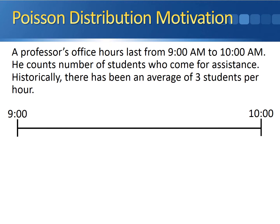Let me give you a motivational example for the Poisson distribution. A professor's office hours last from 9 a.m. to 10 a.m. He counts the number of students who come for assistance during that hour, and he notices that historically there's been an average of three students who show up for each of his office hours.